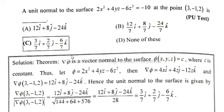Solution: First of all, theorem - gradient φ is a vector normal to the surface φ(x,y,z) = c where c is constant. Let φ = 2x² + 4yz - 6z².